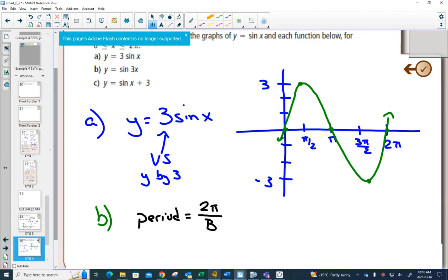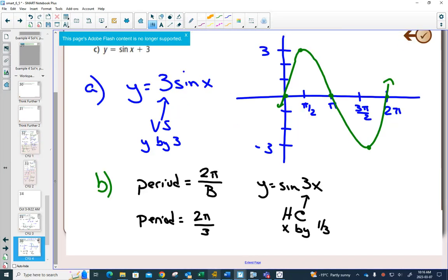Now, when we look at y equals sine 3x, that 3 is a horizontal compression from our transformations unit. We know that we're multiplying by 1 third. The formula, then, says that our period, because the B value is 3, is going to be 2 pi over 3, which is like the 2 pi was multiplied by the 1 third. So I hope you see the connection between the formula and how the horizontal compression works.